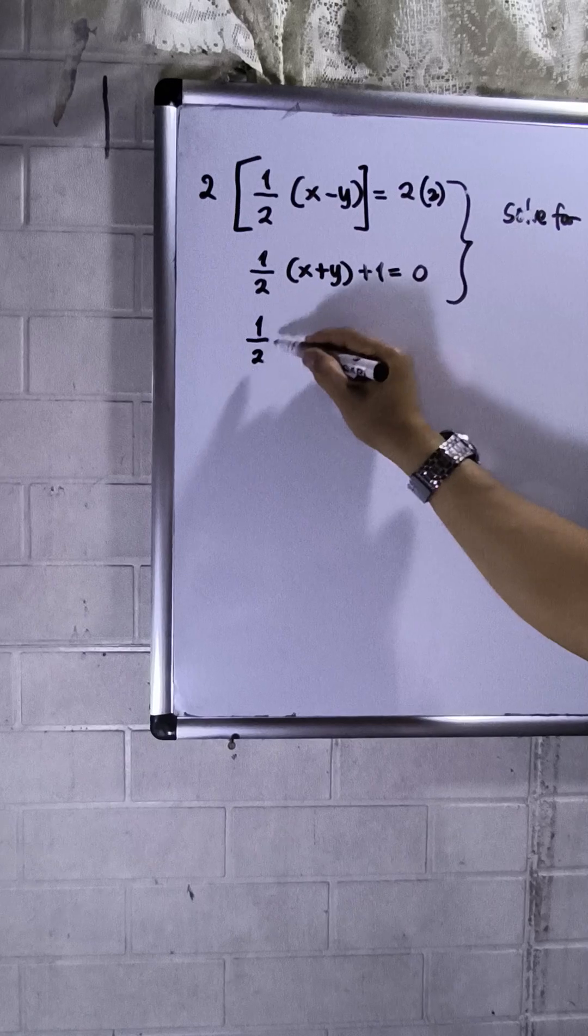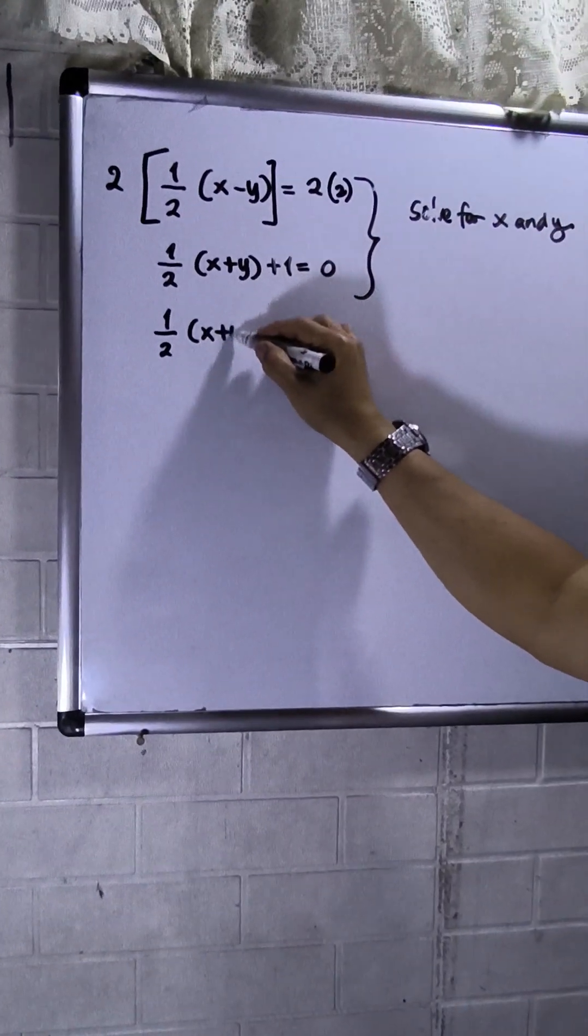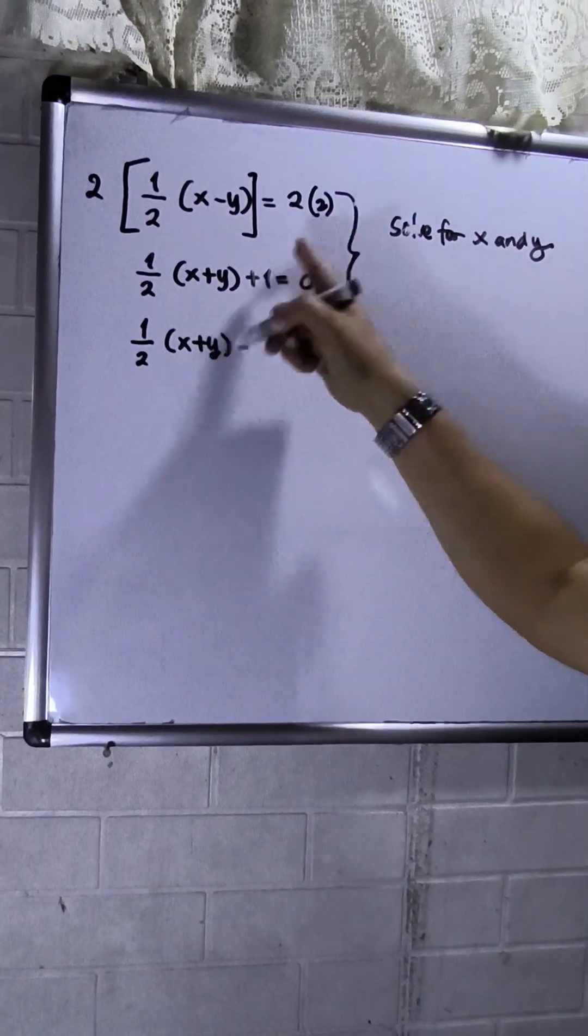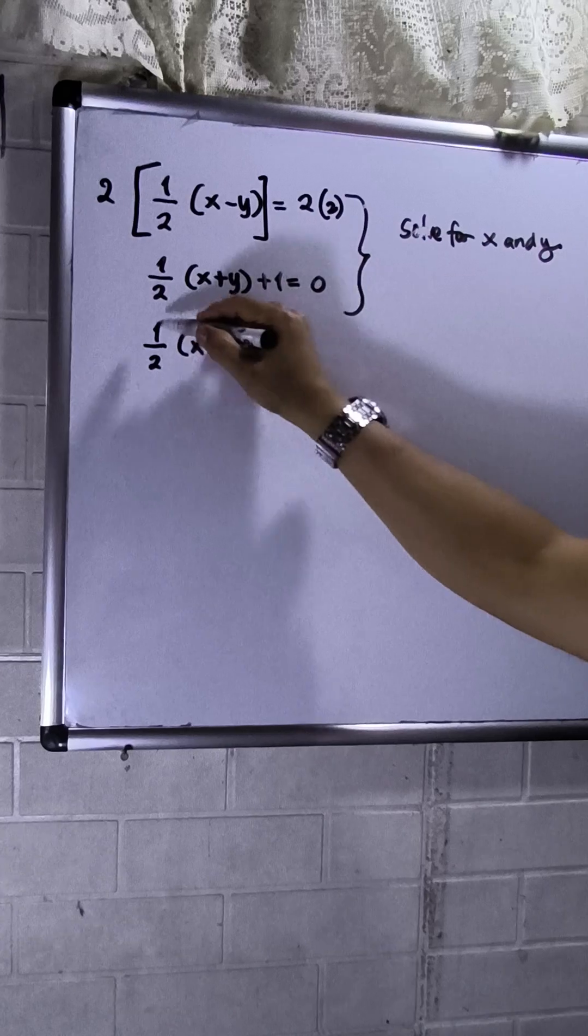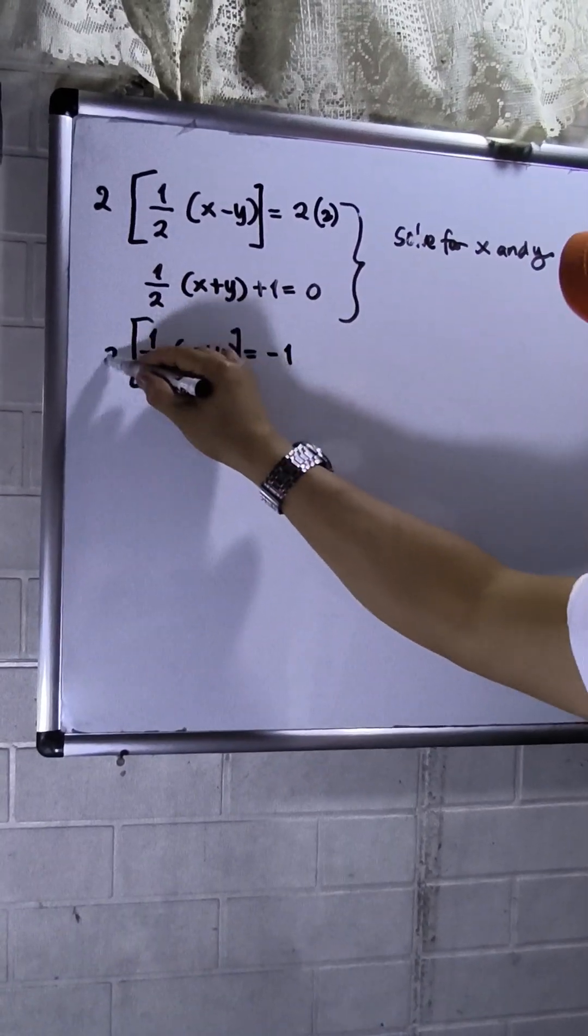This will be transpose one half circle brackets x plus y. Then is equal to negative 1. And then multiply 2 both sides.